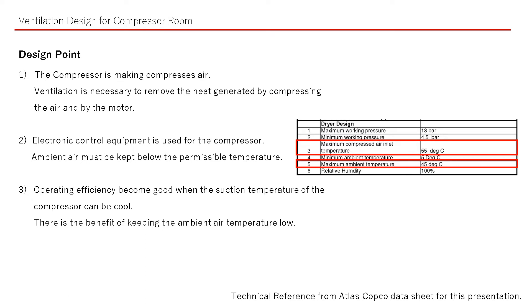Reason 2: Electronic control equipment is used for the compressor. Ambient air must be kept below the permissible temperature. Referring to the specification of the compressor dryer, the maximum ambient temperature is 45 degrees.